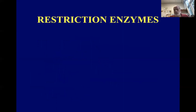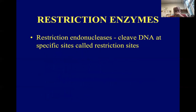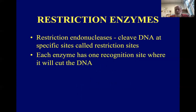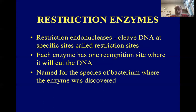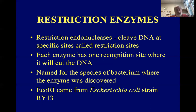Part of this process involved restriction enzymes, which are endonucleases. Endonucleases cut the sugar-phosphate backbone of the DNA molecule. Each of these enzymes has a recognition site — kind of like a word in the DNA that it's looking for — and that's where it cuts. They come from bacteria, so the enzymes are named from the species of bacteria they come from. For instance, EcoR1 came from E. coli strain RY13, and the "1" means it was the first enzyme isolated from E. coli.